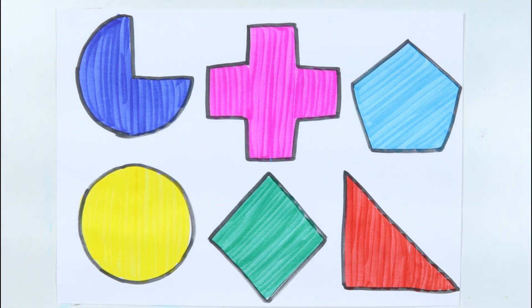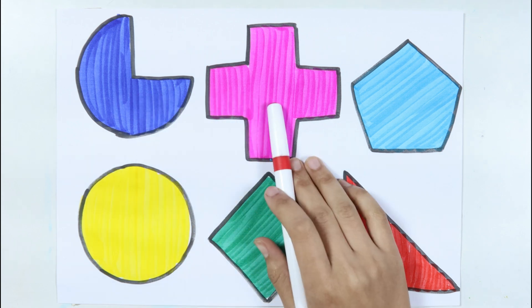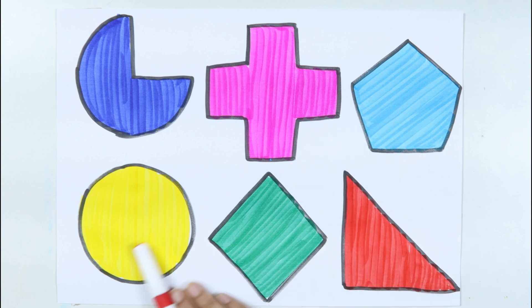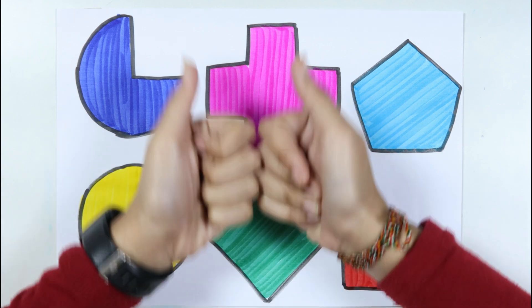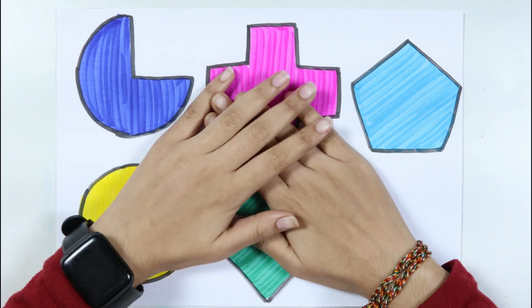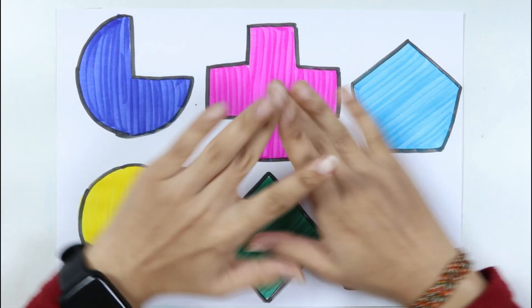Right triangle. Cross. Circle. Rhombus. Right triangle. Thank you for watching my video. And don't forget to like and subscribe. Bye bye.